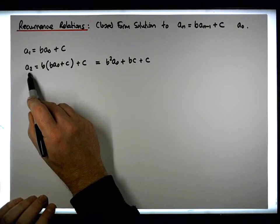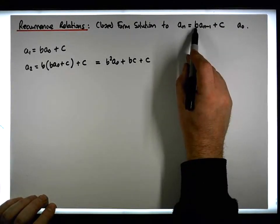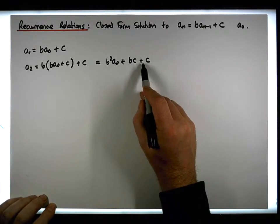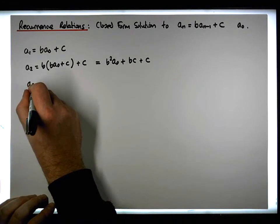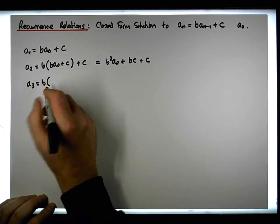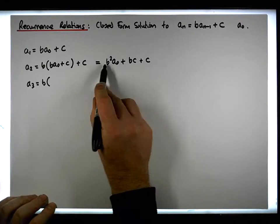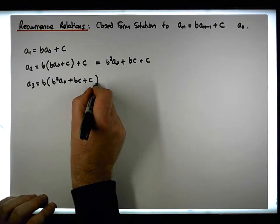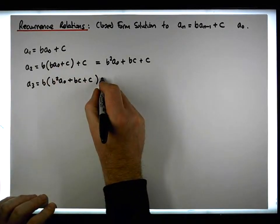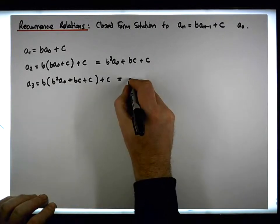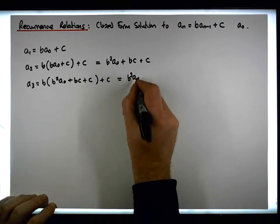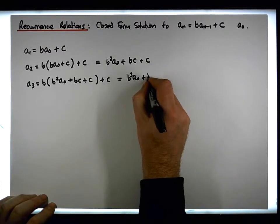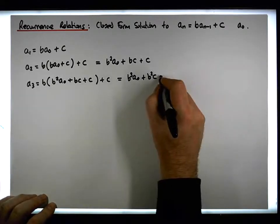For a₃, it equals b times a₂. We just found a₂ to be b²·a₀ plus bc plus c, and we add on the constant c. Multiplying out the brackets gives us b³·a₀ plus b²c plus bc plus c.